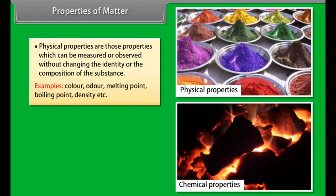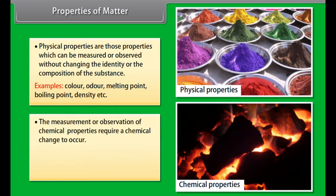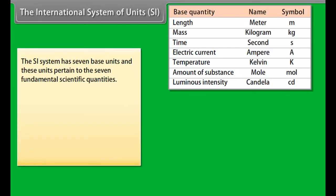Classification of Pure Substance: Pure substances can be further classified into elements and compounds. An element consists of only one type of particles. These particles may be atoms or molecules.